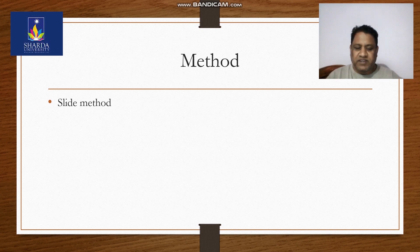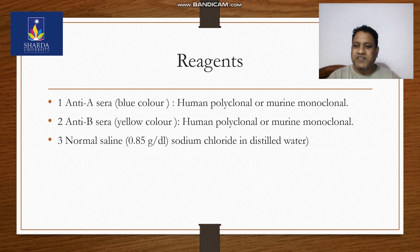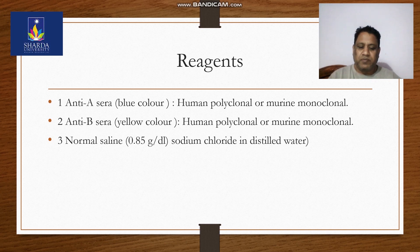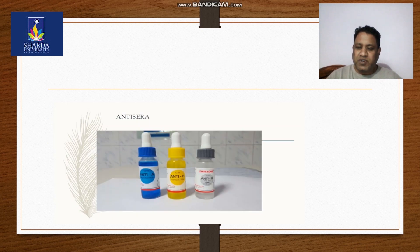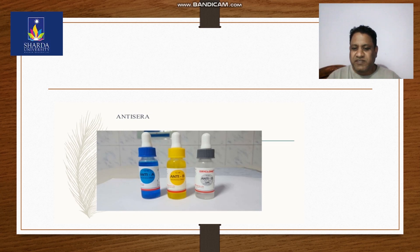The method is the slide method. The reagents used are: anti-A sera, which is blue in color; anti-B sera, which is yellow in color; and normal saline — 0.85% grams per deciliter sodium chloride in distilled water. These are the requirements to conduct this test. Anti-A is blue colored, anti-B is yellow colored, and anti-D is colorless. These are also known as antisera.